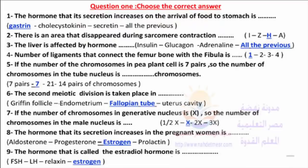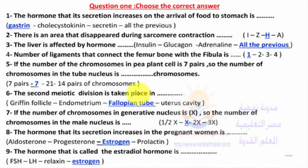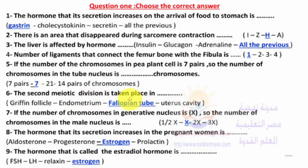The second amniotic division takes place in the fallopian tube. The fallopian tube is the tube that allows the passage of the egg from the ovary to the uterus, also known as the uterine tube.